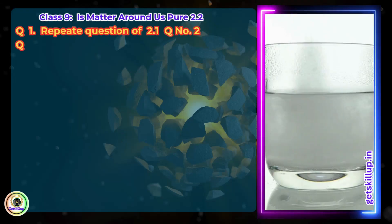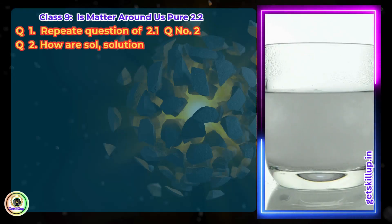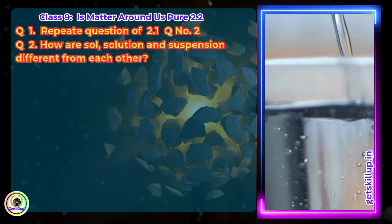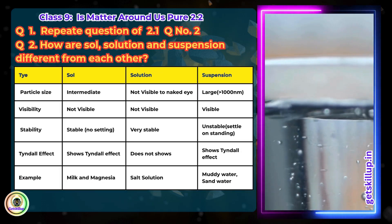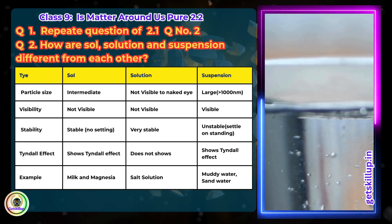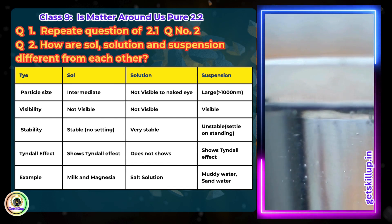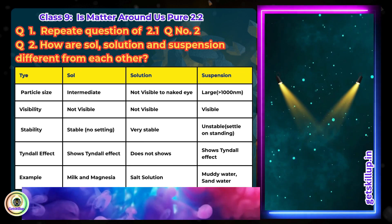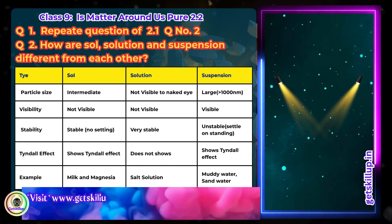Question 3: How are sol, solution and suspension different from each other? Sol — particle size: intermediate; visibility: not visible to naked eye; stability: stable, no settling; Tyndall effect: shows Tyndall effect. e.g. milk of magnesia, paint.